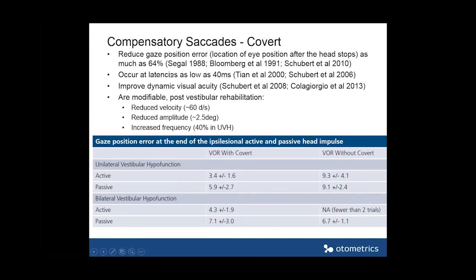The latencies at which these saccades occur have been reported to be as low as 40 milliseconds, which is really phenomenal. Latency refers to the onset of the compensatory saccade relative to the onset of the head rotation. The normal latency of the vestibulo-ocular reflex is about six to ten milliseconds, so the brain generating these saccades does not do as good a job as the nerve. But 40 milliseconds has been reported in the literature — most occur later, but some folks do show earlier latencies.